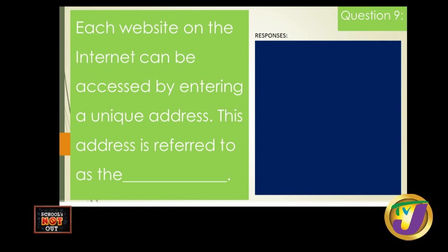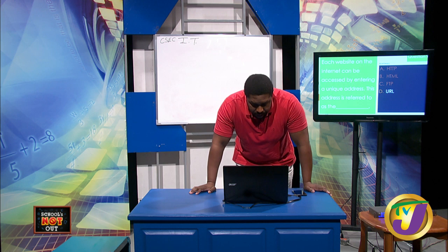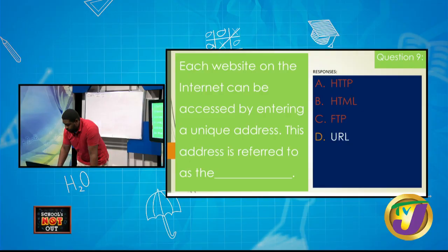Question nine: each website on the internet can be accessed by entering a unique address. This address is referred to as A) HTTP, B) HTML, C) FTP, or D) URL. Expanding these: HTTP is Hypertext Transfer Protocol, HTML is Hypertext Markup Language, FTP is File Transfer Protocol, and URL is Uniform Resource Locator. The answer is D: URL — for example, www.cxc.org is a URL.